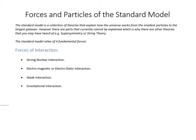Let's break it down into the fundamentals. The standard model is based on four types of interaction: the strong nuclear interaction, the electromagnetic (sometimes called electrostatic), the weak interaction, and the gravitational interaction. This list is in order of increasing strength going upward — so the strong force is the strongest. The thing that catches people out is the weak force isn't actually the weakest; gravitational is by far the weakest, which is why it's the force scientists know the least about.